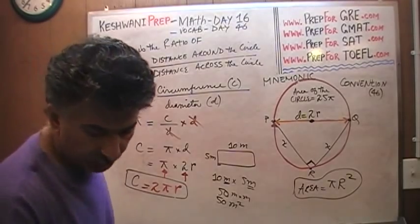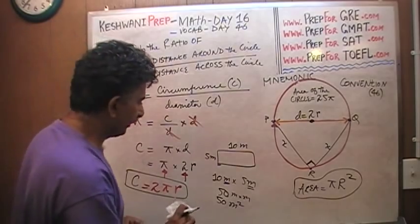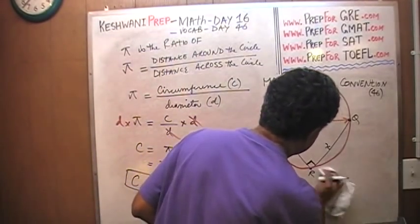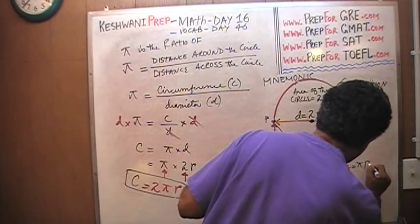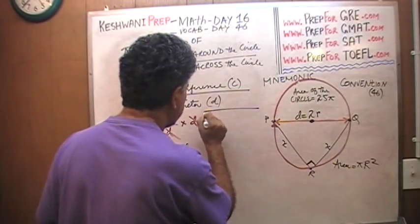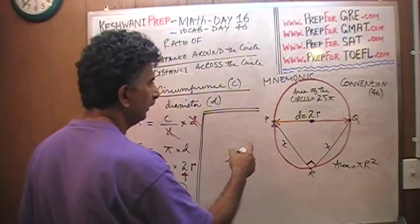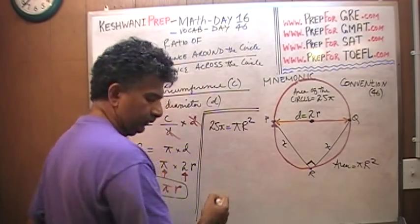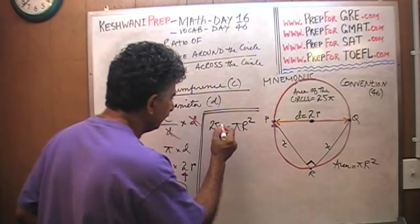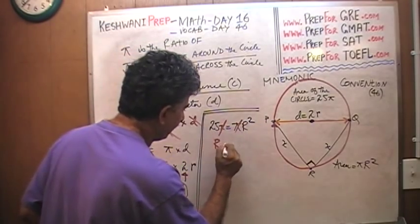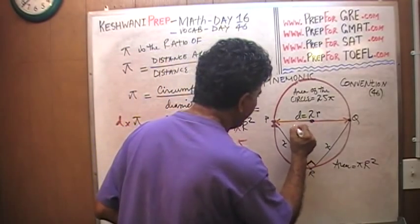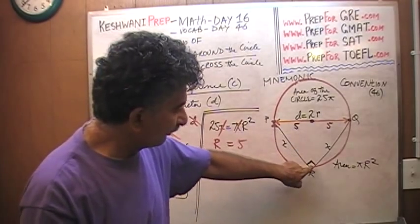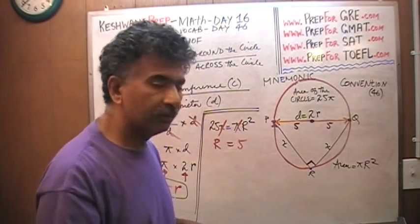Now let's finish the problem. Area equals πr², and we are told the area equals 25π. So 25π equals πr². Divide both sides by π — the pi drops out — and r² equals 25, which means r equals 5. If r equals 5, then from P to the center is 5 and from the center to Q is another 5, so the hypotenuse PQ equals 10. This is a right angle triangle with hypotenuse 10, and both legs equal x.